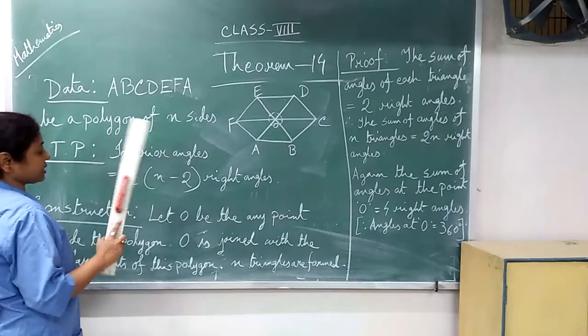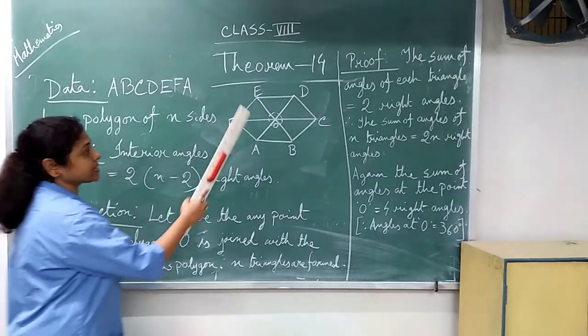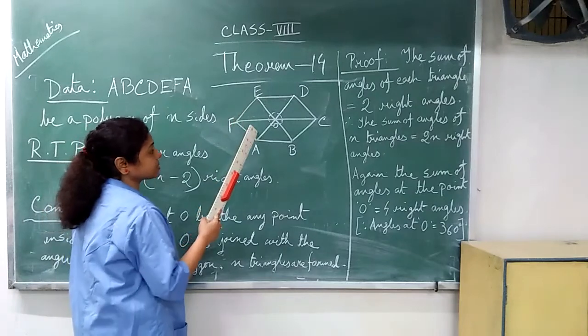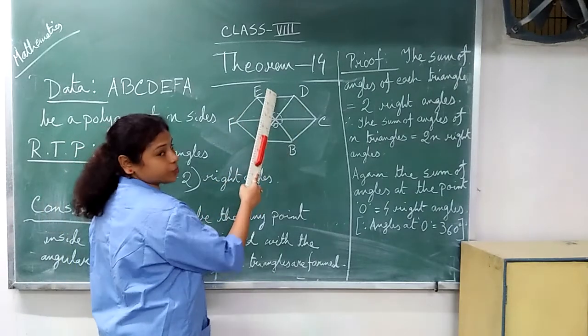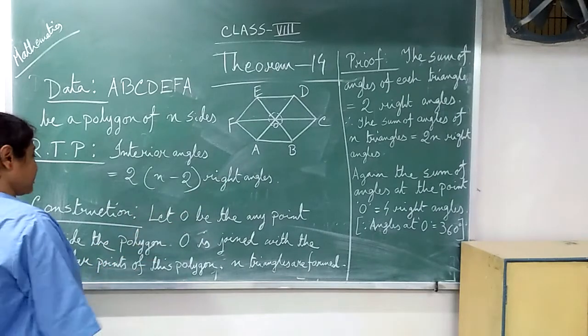RTP: interior angles is equal to 2 into n minus 2 right angles. Interior angles means these angles, equal to 2 into n minus 2 right angles.